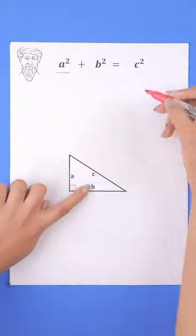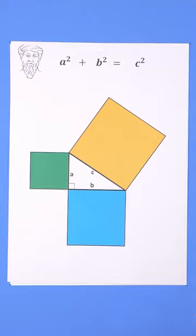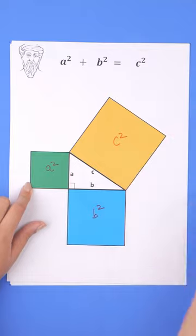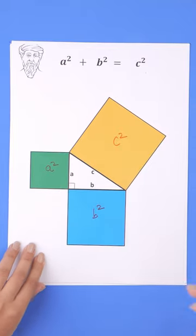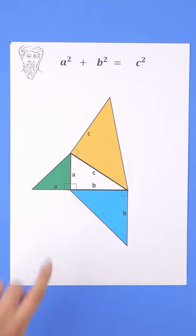Pythagoras said a squared plus b squared equals c squared. In terms of areas, the sum of areas of these two squares equals this one, but this works for not just squares but for any shape as long as they are scaled versions of each other.